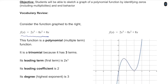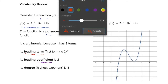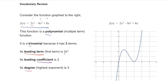First, just a brief vocabulary review. This is a polynomial because it has multiple terms, and specifically it is a trinomial because there are 1, 2, 3 separate terms. The leading term — the term in front when arranged from highest to lowest exponent — is 2x cubed. The leading coefficient refers just to the number, so that's the 2. And degree means the highest exponent your function has; in this case it's 3, so this is a third degree polynomial.